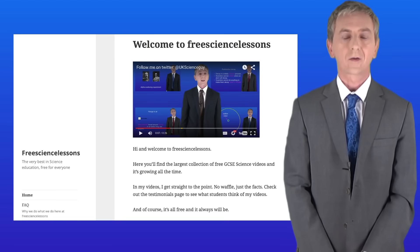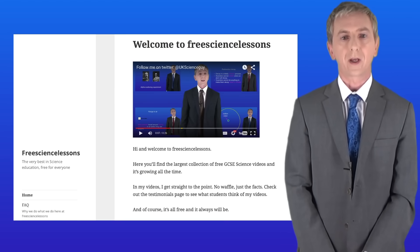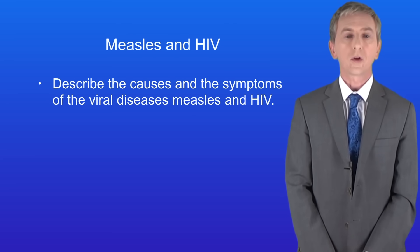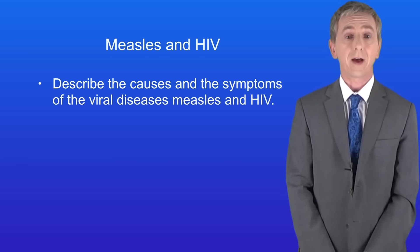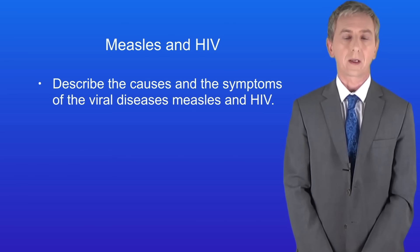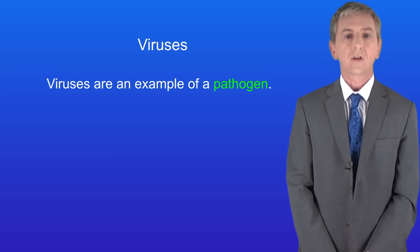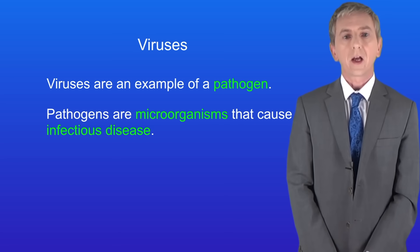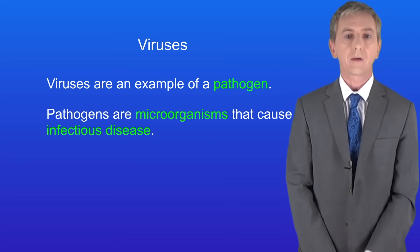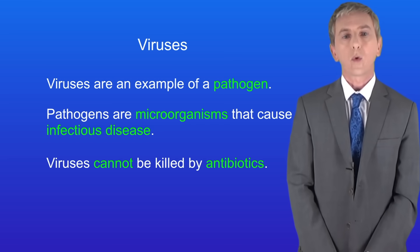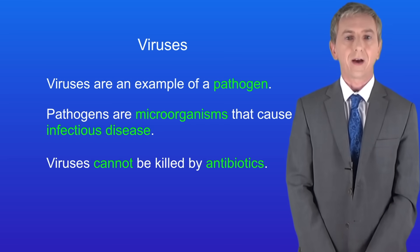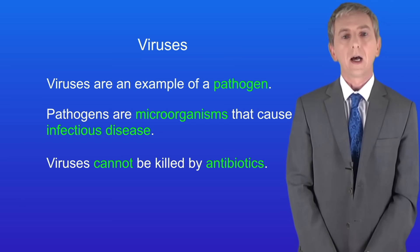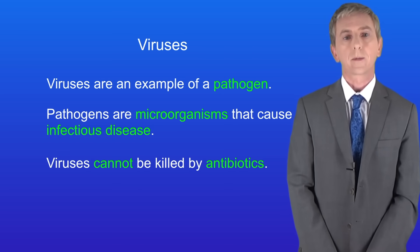Hi and welcome back to freesciencelessons.co.uk. By the end of this video you should be able to describe the causes and the symptoms of the viral diseases measles and HIV. Remember that viruses are an example of a pathogen. Pathogens are microorganisms that cause infectious disease. One key fact about viruses is that viruses cannot be killed by antibiotics.